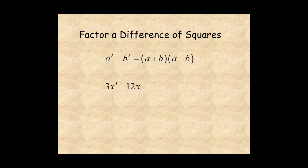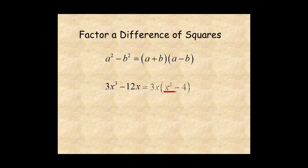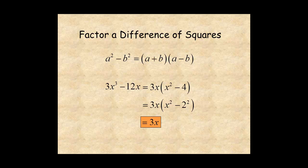For this binomial, begin by factoring out a GCF of 3x. This leaves x squared minus 4, which is x squared minus 2 squared. And the binomial factors as 3x times x plus 2 times x minus 2.